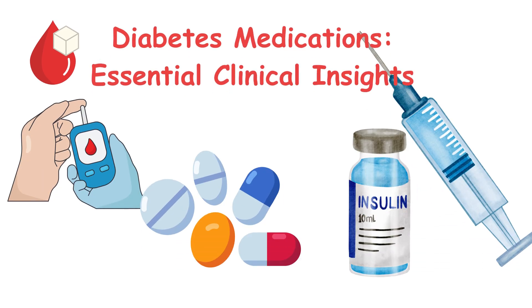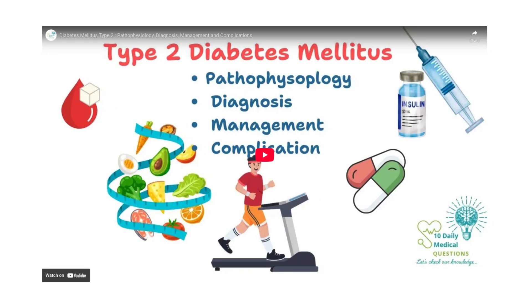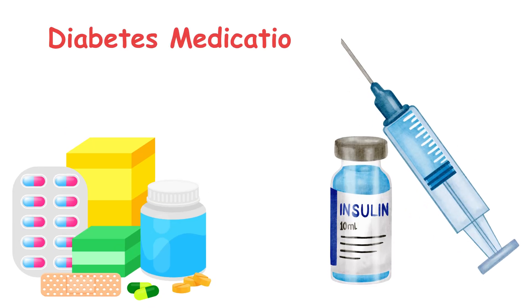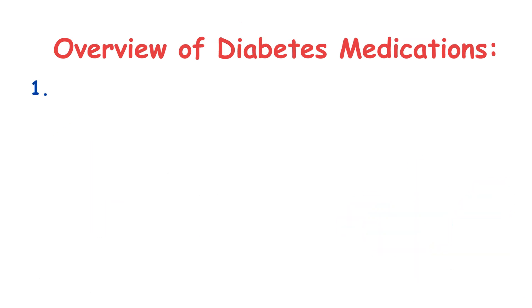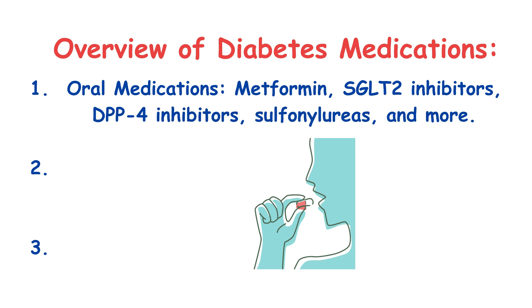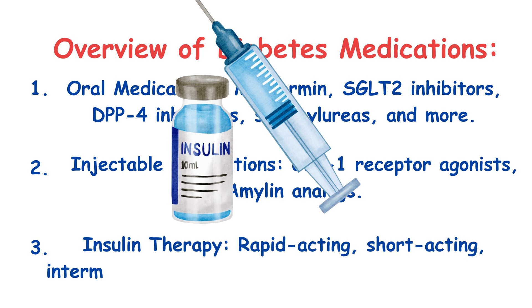Welcome to our fourth video in our diabetes series. If you haven't watched our previous videos on diabetes introduction, type 2 diabetes, and type 1 diabetes, the links are in the description box below. Today, let's dive into the medications used in diabetes management — crucial knowledge for everyday clinical practice. Diabetes medications can be divided into three main categories: oral medications like metformin and SGLT2 inhibitors, injectable drugs like GLP-1 receptor agonists, and of course insulin therapy.